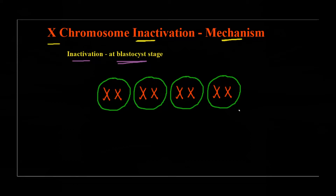Randomly, any one chromosome would undergo inactivation. For example, in one cell this chromosome might undergo inactivation, and in another cell a different chromosome undergoes inactivation — there is a 50/50 chance that any one X chromosome undergoes inactivation.